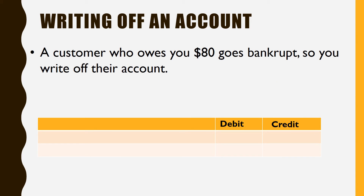The last thing we need to talk about is what you do when somebody really isn't going to pay you — we call that writing off the account. Let's say a customer goes bankrupt, so you know they're never going to pay. We need to write off the account. The good news is it doesn't matter which method you used to estimate the allowance — you always do the same thing for the write-off.